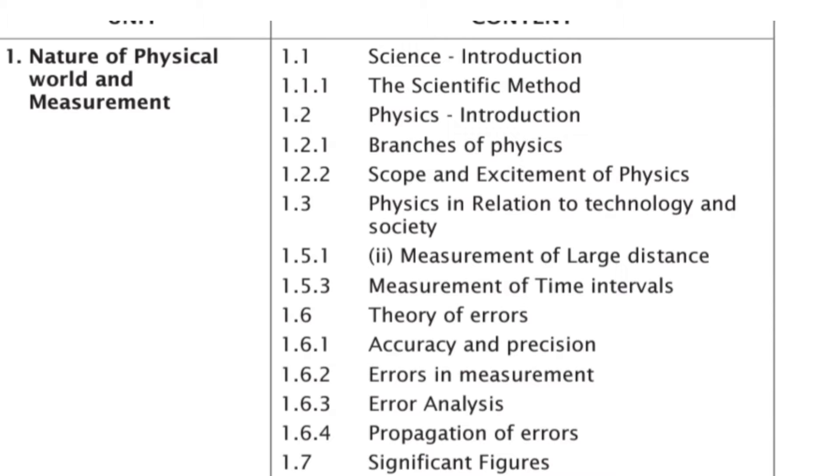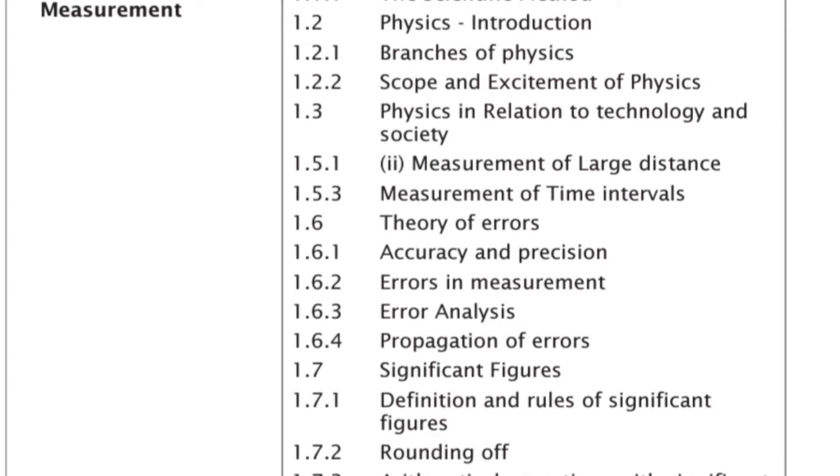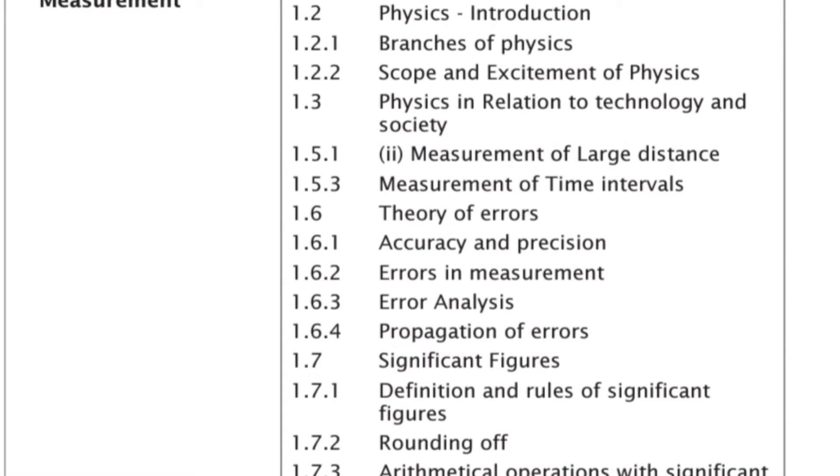Chapter 1 continued: 1.2.2 Scope and Excitement of Physics, 1.3 Physics in Relation to Technology and Society, 1.5.1 Measurement of Large Distance, 1.5.3 Measurement of Time Intervals, 1.6 Theory of Errors, 1.6.1 Accuracy and Precision, 1.6.2 Errors in Measurement, 1.6.3 Error Analysis, 1.6.4 Propagation of Errors, 1.7 Significant Figures, 1.7.1 Definition and Rules of Significant Figures.